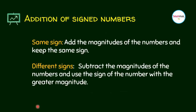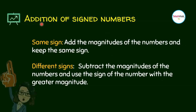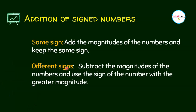Let us now look at how to do operations on signed numbers. In particular, we want to add signed numbers. There are two rules, and it depends whether you have the same sign or different signs.